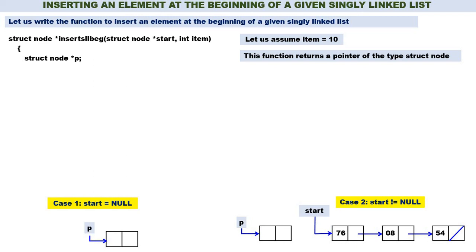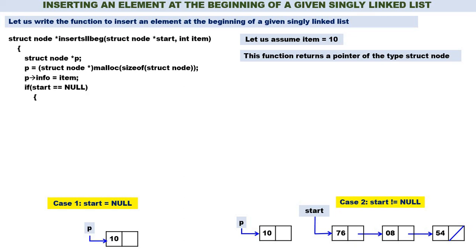The next step is to insert 10 into the new node in both cases. The statement is: p->info = item. Item is equal to 10, therefore p->info = item. Next we check the condition: if start is equal to null, then p->next should become null — the address part of P should become null. So the statement is: p->next = null.